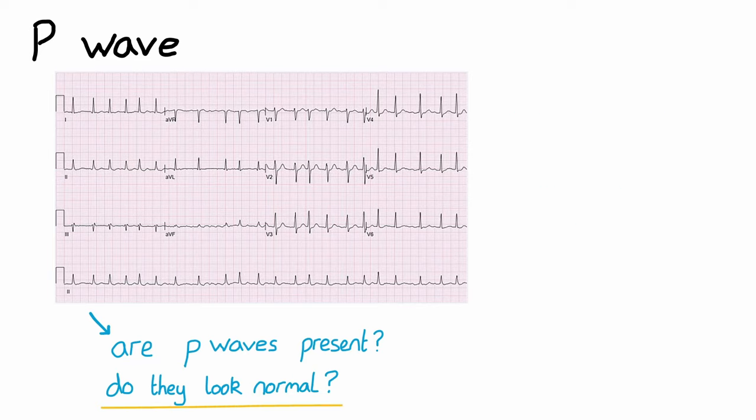After the PR interval, we need to assess the QRS complex. Similar to assessing P waves, there are multiple questions we need to ask. Firstly is width. Is the QRS complex narrow—that is, is it less than 0.12 seconds, or three small squares? Or is it broad—that is, more than 0.12 seconds?